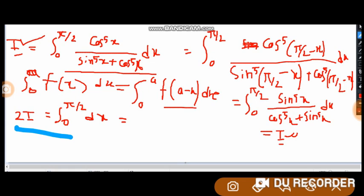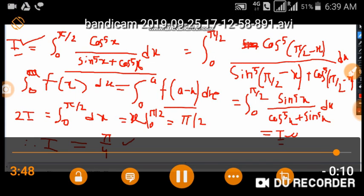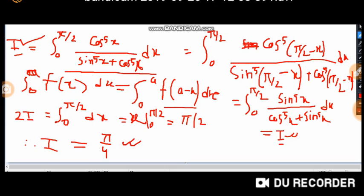So we can say it will be 0 to π/2 dx, only 1. And this integration is now very easy and it has value x from 0 to π/2 equals π/2. This is the value of 2I, but we have to find out the value of only I. So we can say I equals π/4. This is the solution of this definite integral.